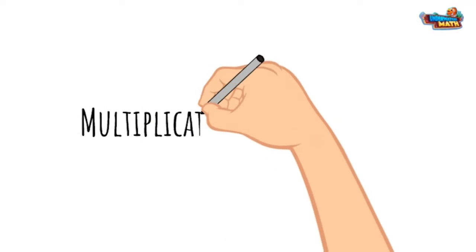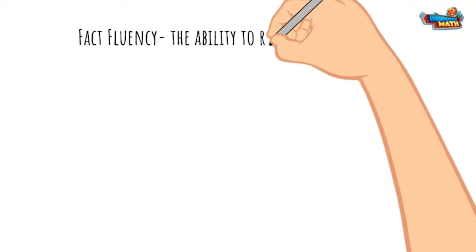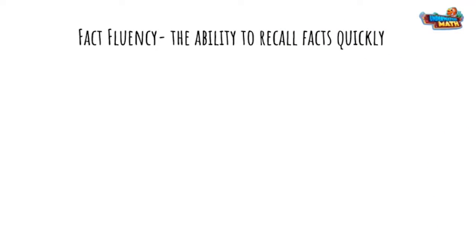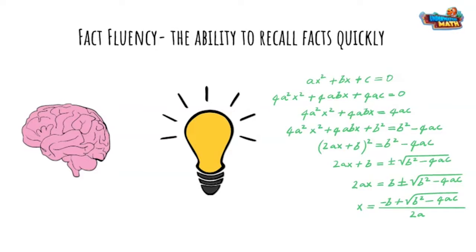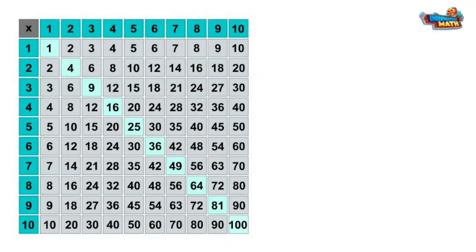Let's talk about multiplication fact fluency. Fact fluency is the ability to recall facts quickly. Knowing your facts quickly frees your brain up to do harder math later. Here is a multiplication chart. There are many strategies to use when learning multiplication facts.